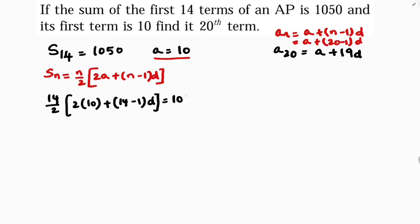So if I will simplify this, I will get the value of D. Now, 7 times 2 times 10, 20 plus 13D equals 1050 by 7.